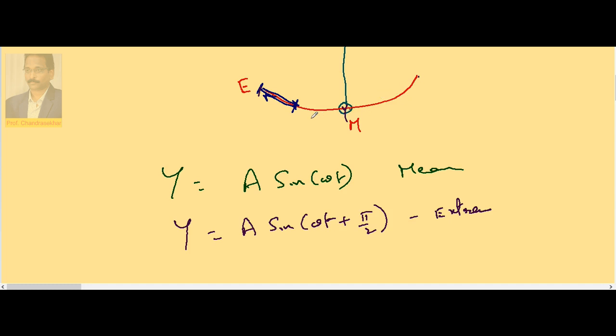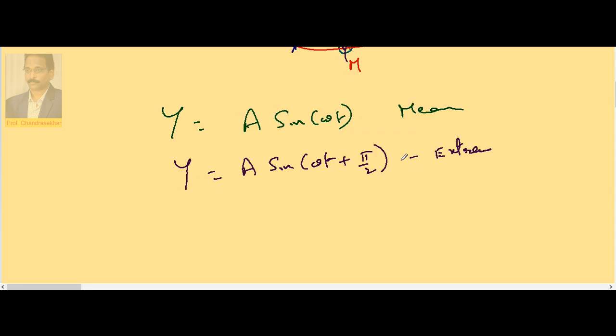So it is 4 into π/2, which is 2π when it completes one oscillation. So if it starts from mean, take the equation y = A sin ωt. If it starts from extreme, take the equation y = A sin(ωt + π/2) or A cos ωt.